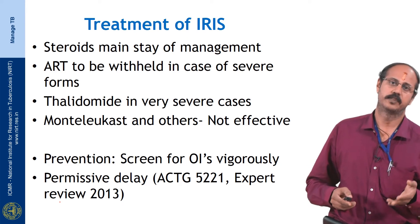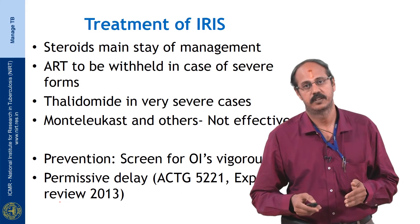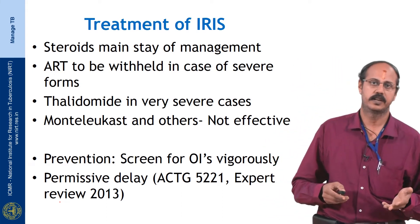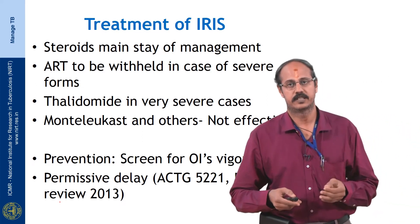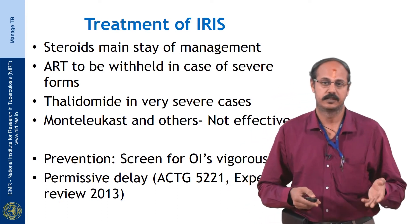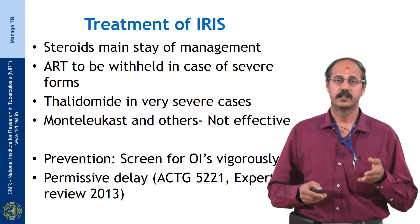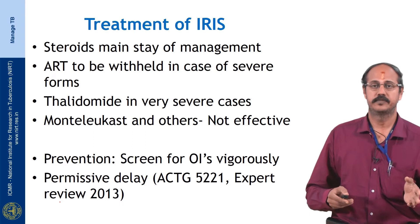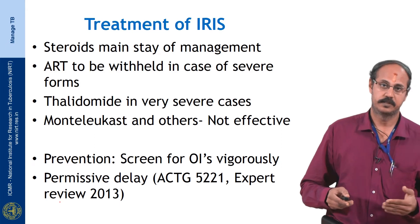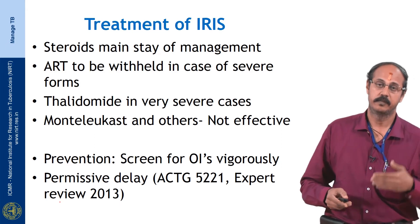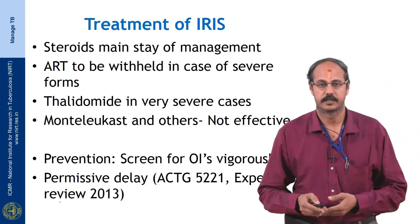For IRIS prevention, starting ART early once HIV is diagnosed prevents CD4 from falling, resulting in less toxicity and less IRIS. Vigorous screening for opportunistic infections is critical to enable uneventful immune recovery. The permissive delay strategy — waiting until the intensive phase of ATT if CD4 is above 100 — allows stabilization before initiating ART. We have aligned these views with the ACTG 5221 trial findings, published in Expert Review 2013.